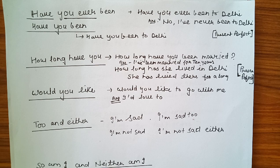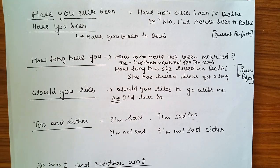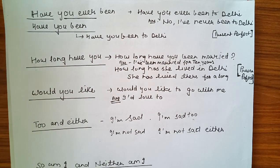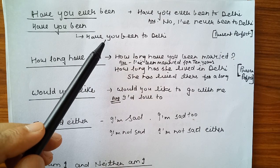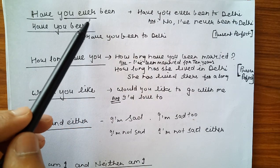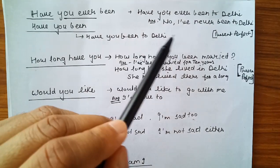We start with 'have you ever' or 'have you ever been' — these are present perfect phrases. For example, 'Have you ever been to Delhi?' The answer would be 'No, I have never been to Delhi' or 'Yes, I have been to Delhi.' We can also simply ask 'Have you been to Delhi?' without using 'ever.'